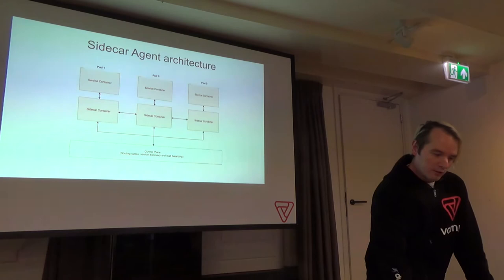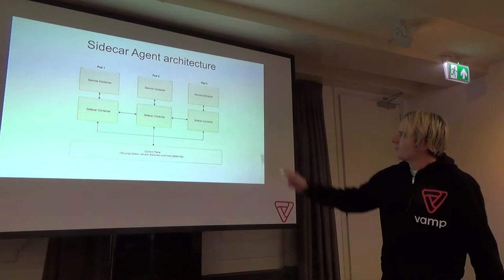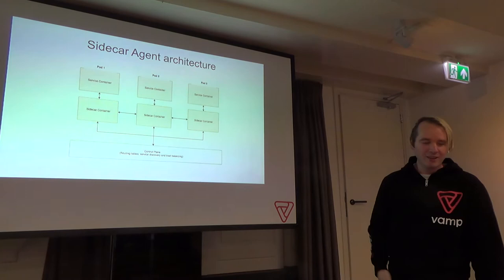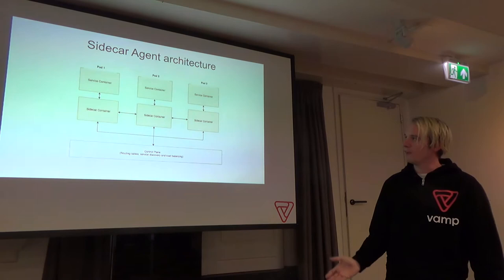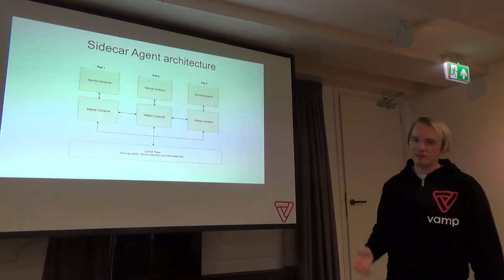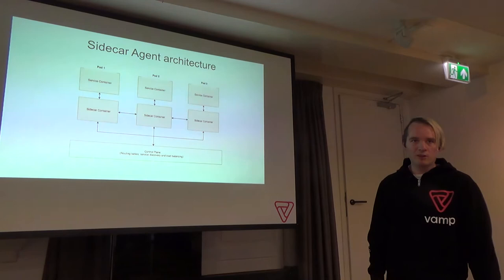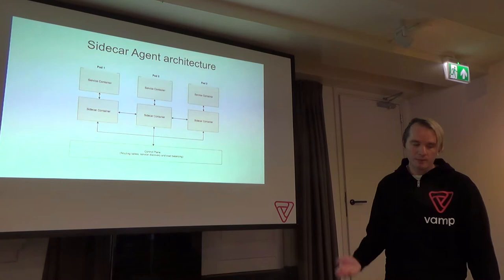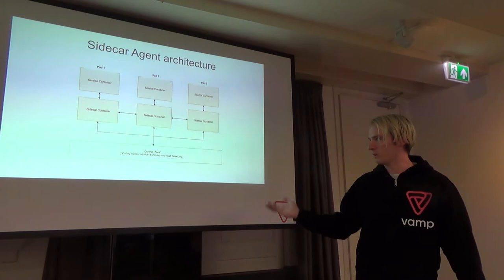With the sidecar agent architecture, the main difference is that on a single pod you have both a service container and a sidecar container, which is the sidecar agent — it's still a proxy, so the model is essentially the same. The key difference is you have a proxy per pod instead of a proxy per node, and the interaction with the control plane is basically the same.